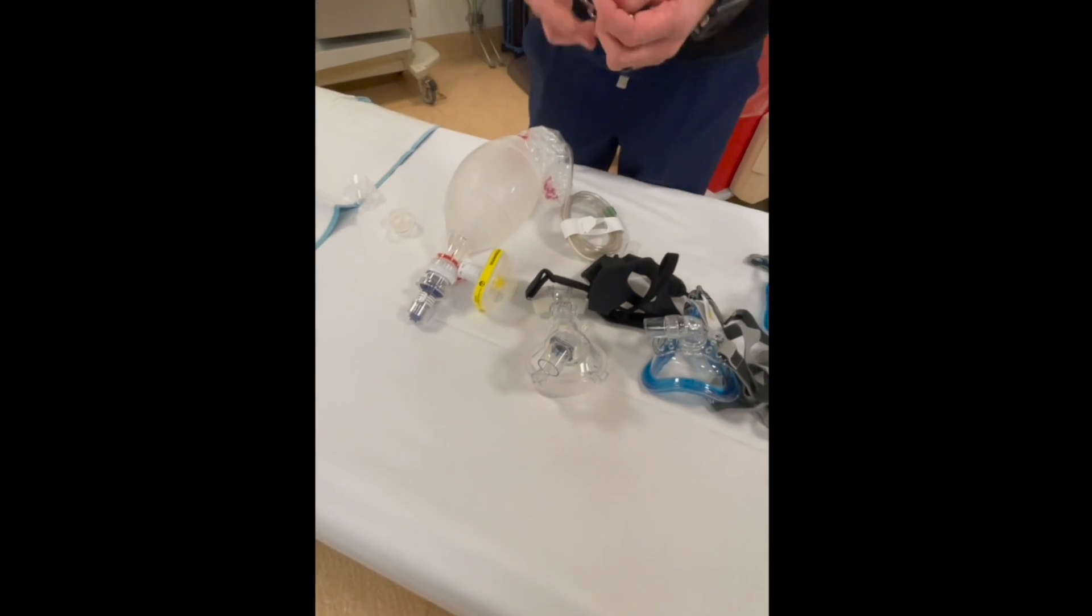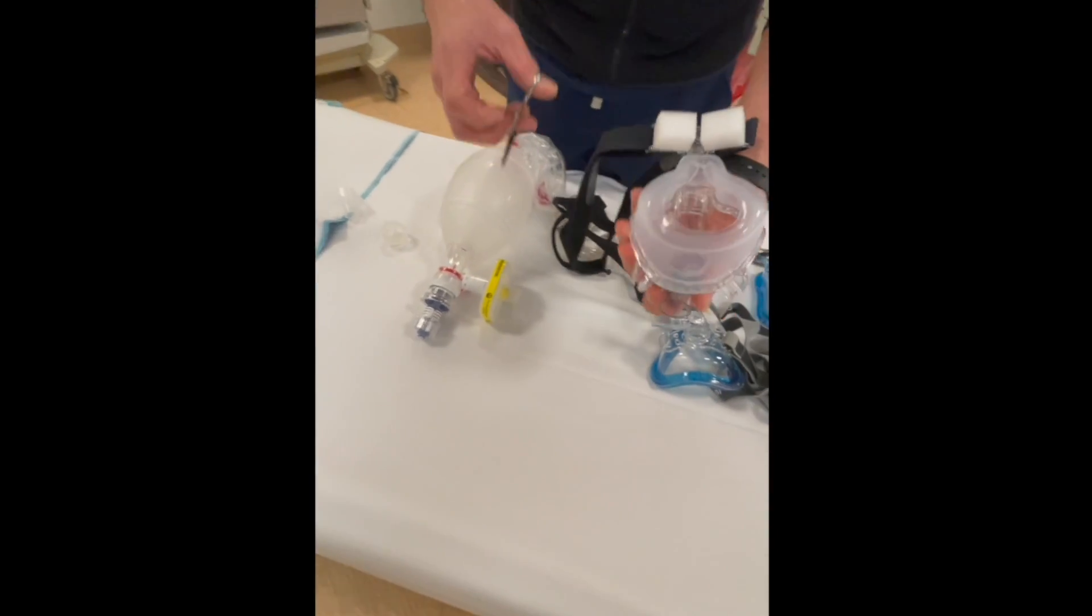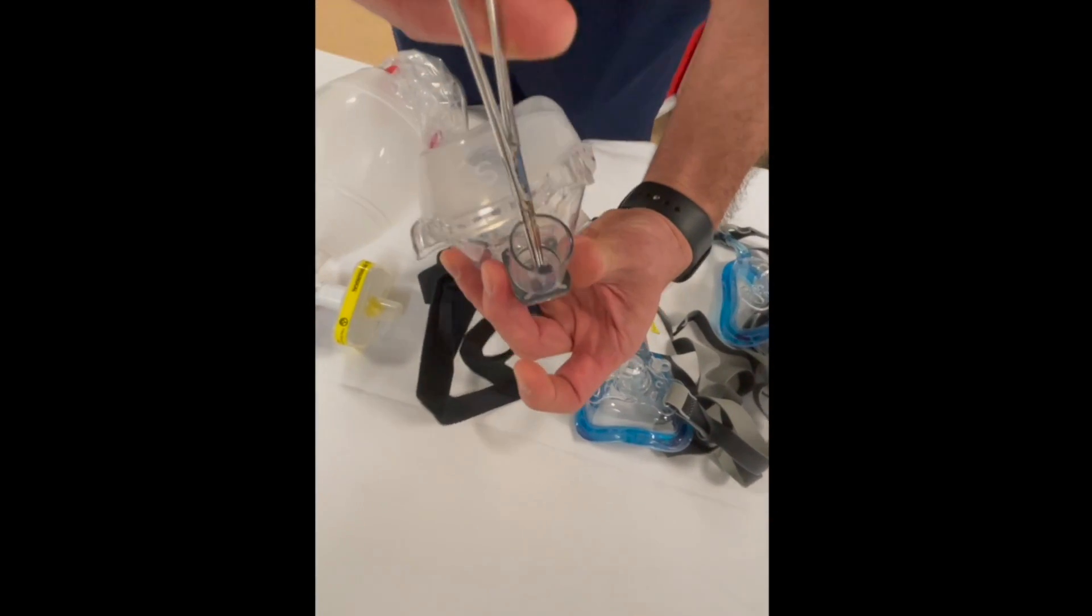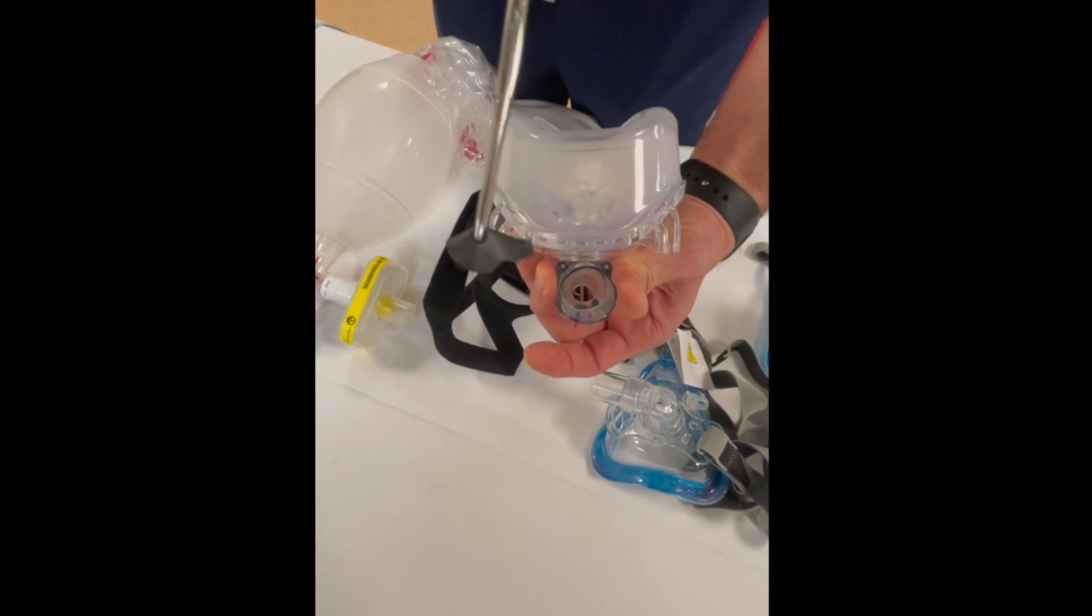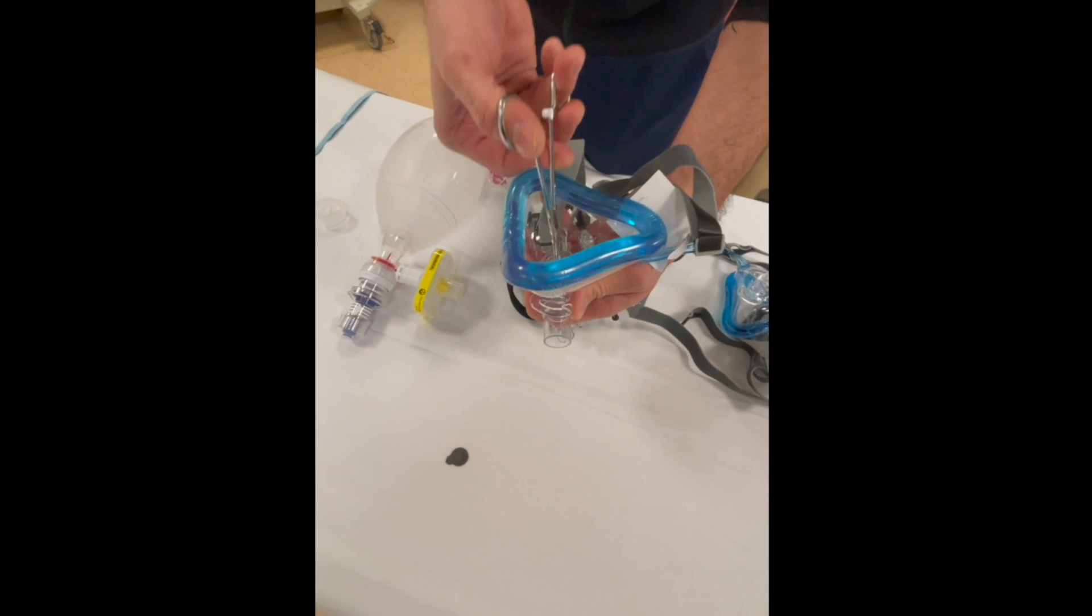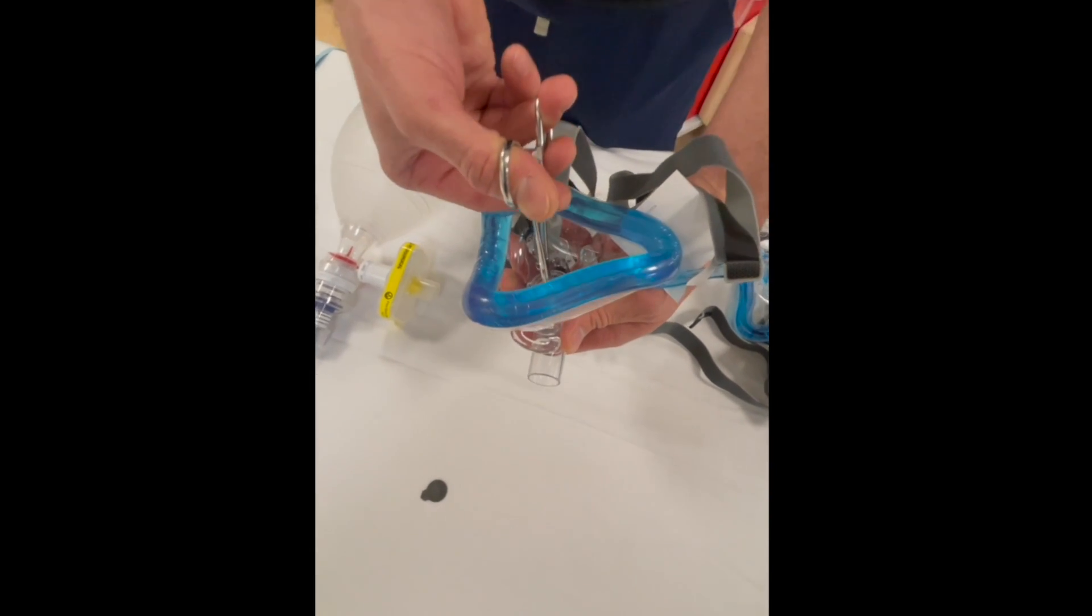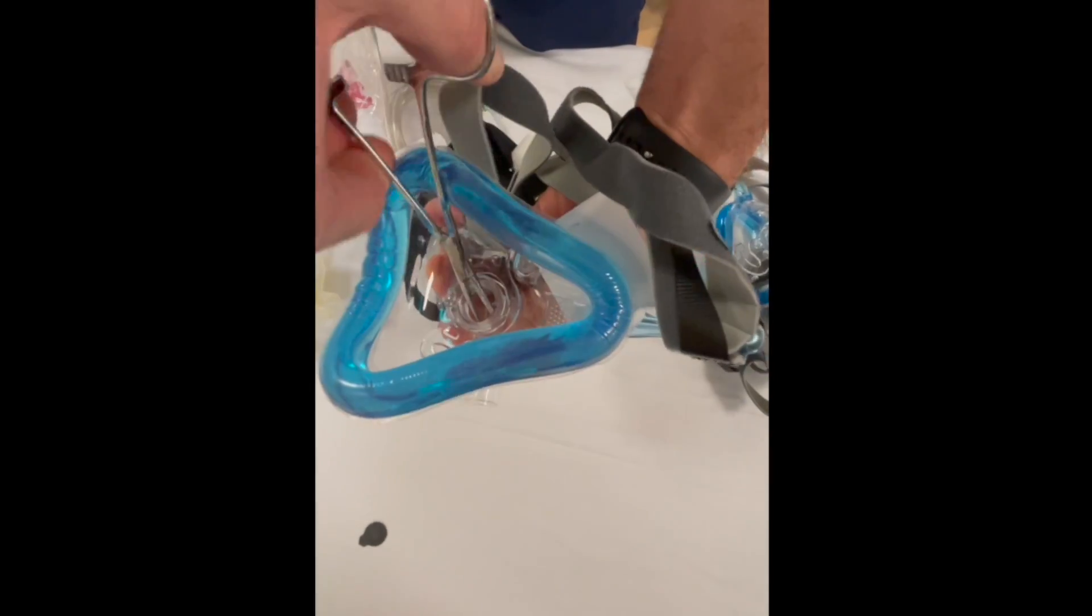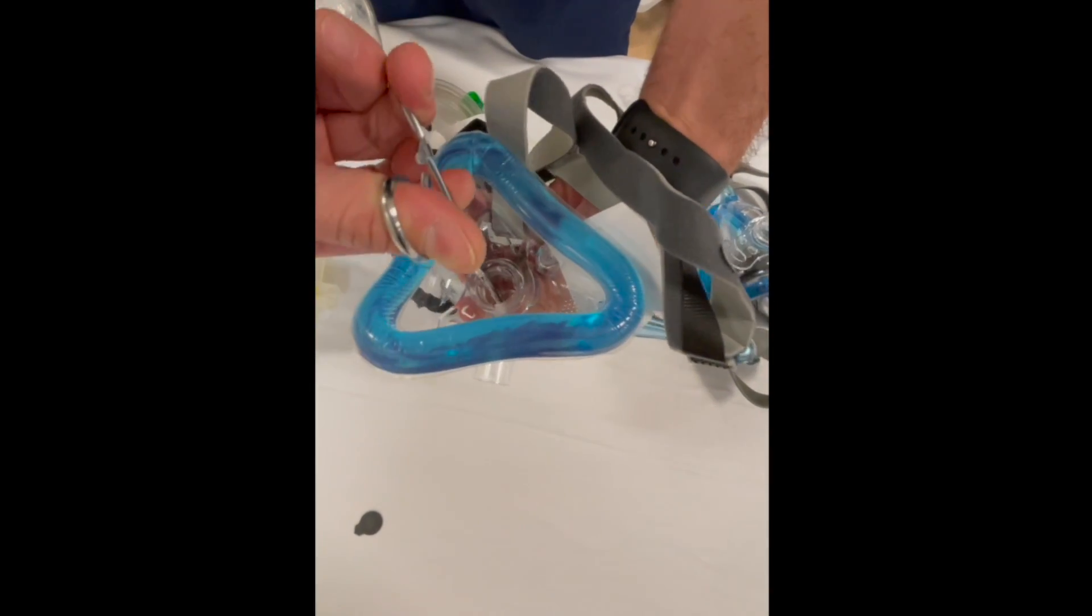How I do it: I usually grab a pair of Kelly clamps or whatever you want to use, and then you just go in and literally just grab it and pull it out. On this one it's going to be the same thing. You can either reach in through the mask here if you can't grab it, and you're going to remove the actual valve.